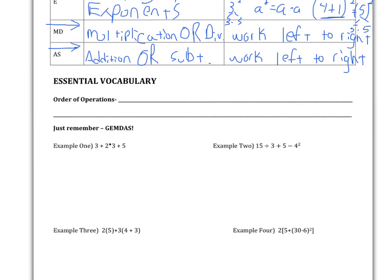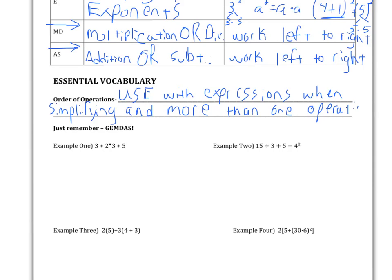Now the most important thing about all this is knowing when to use order of operations. GEMDAS just tells us the order in which we should do operations. We use whenever, so when do we use order of operations or GEMDAS? We use with expressions. Remember, expressions do not have an equal to sign. So we use with expressions when simplifying and here's the key right here: more than one operation. More than one operation, that's the key to this.